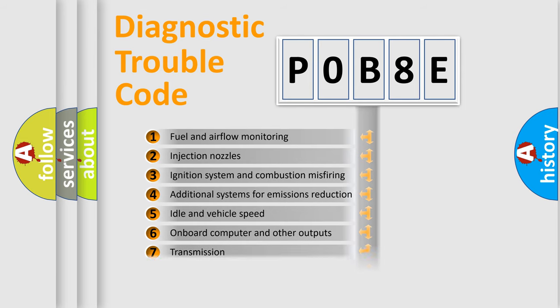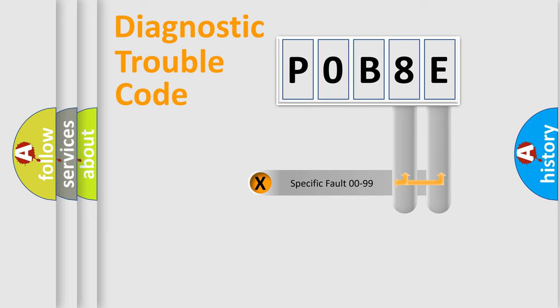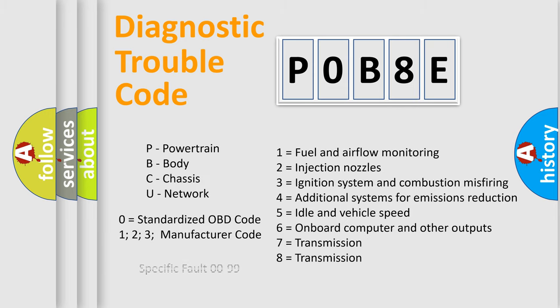The distribution shown is valid only for the standardized DTC code. Only the last two characters define the specific fault of the group. Let's not forget that such a division is valid only if the second character code is expressed by the number zero.